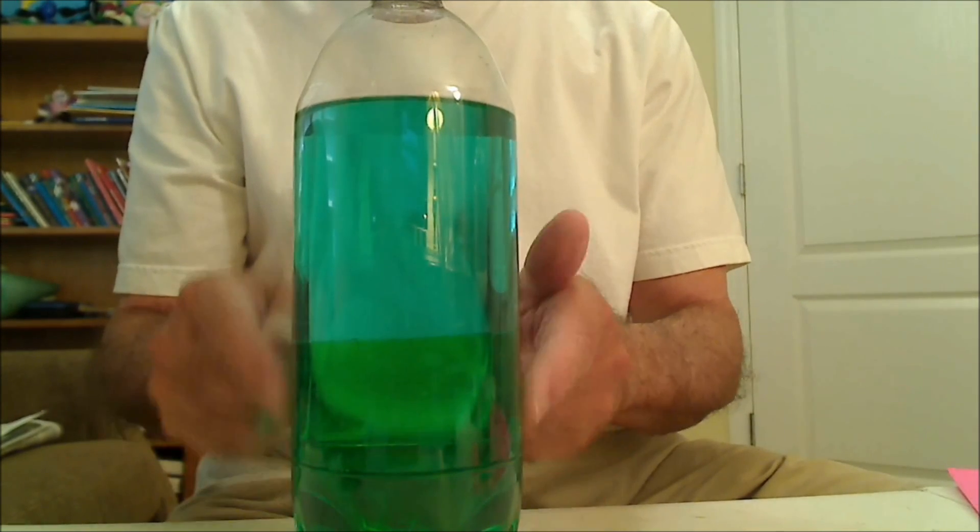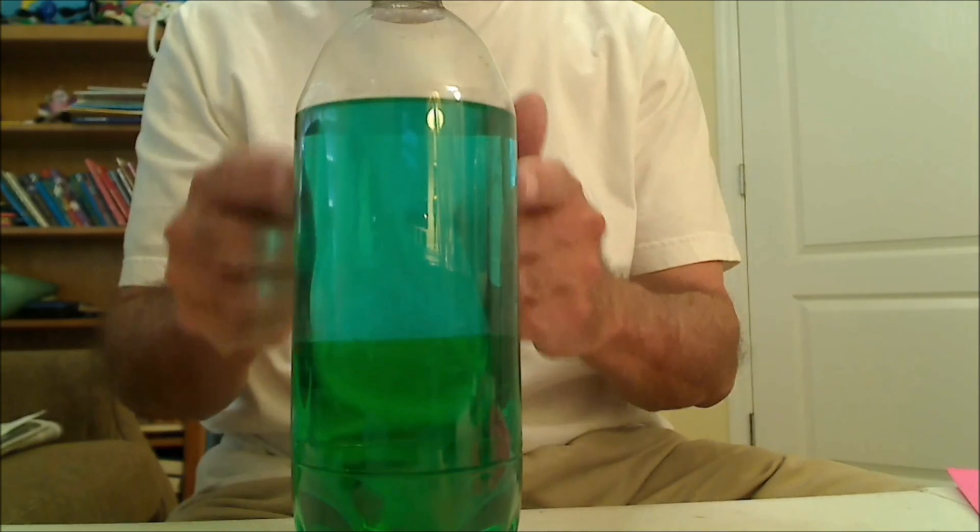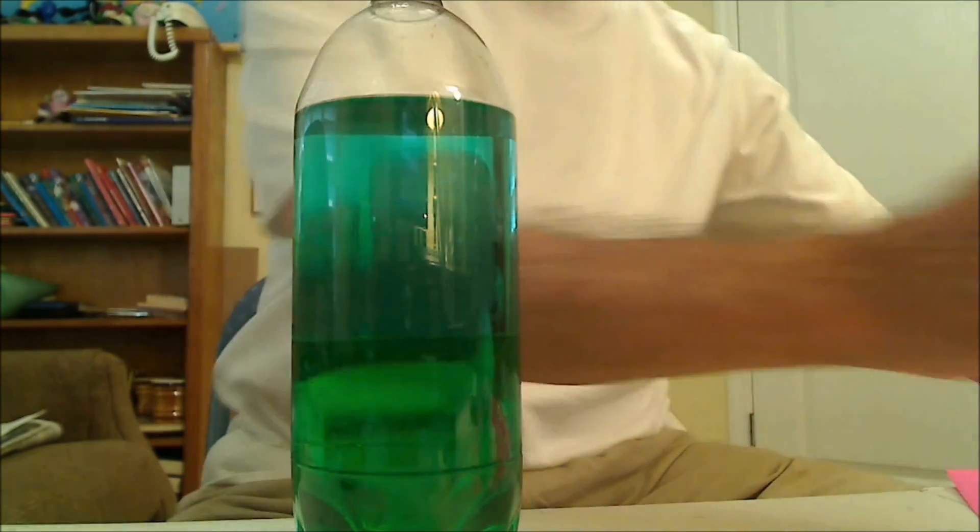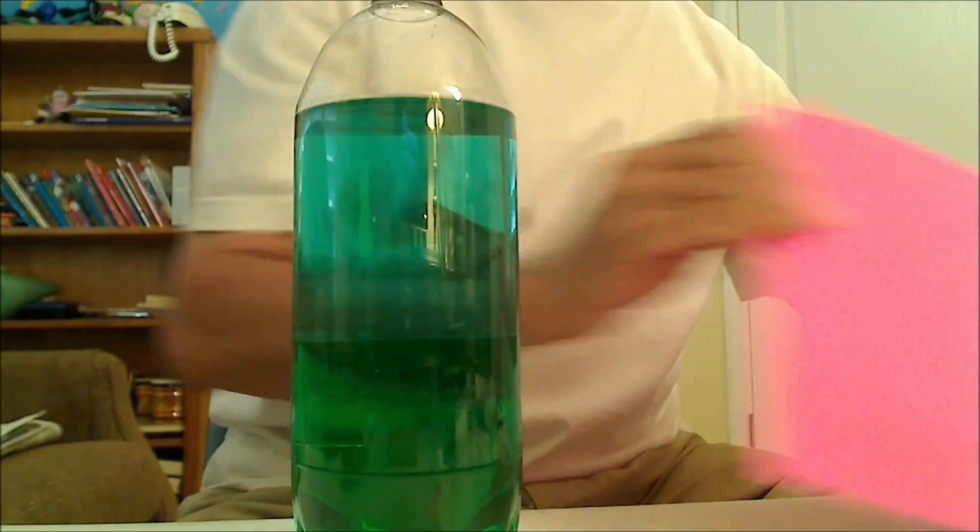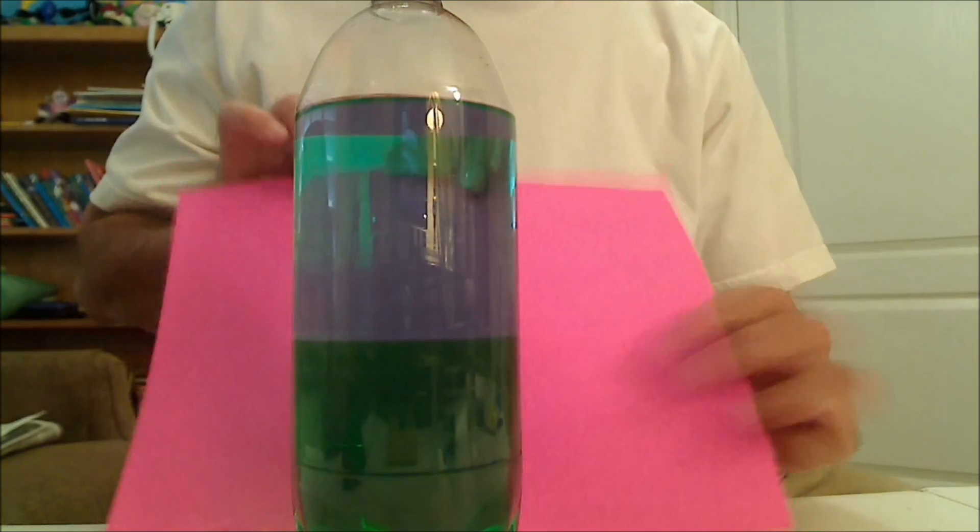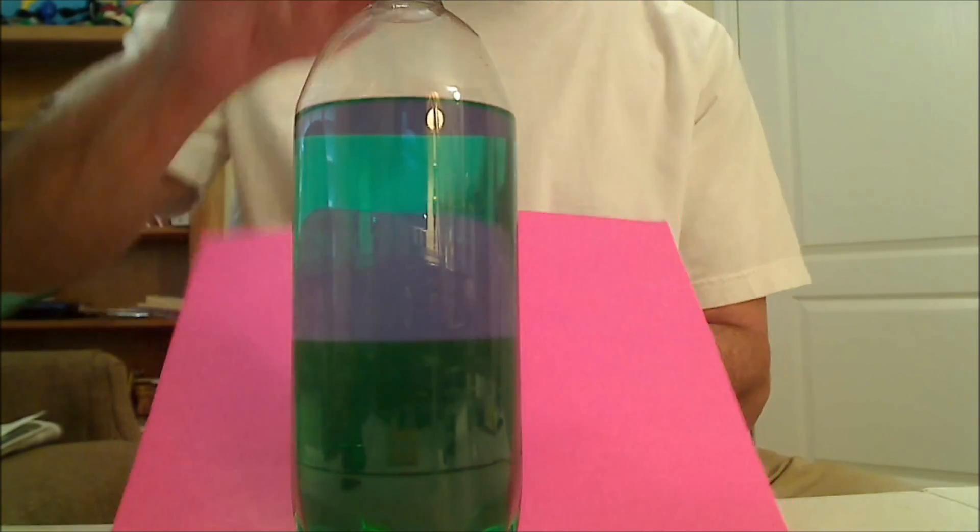The bottom phase is mainly salty water. It's more dense than the isopropyl alcohol in the top phase. You can see the phase boundary. I'm going to put a little piece of red here. You can see the phase boundary wiggling around.